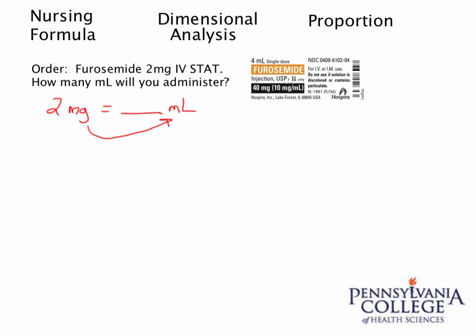If we look at the label here to the right, I see 4 milliliters and 40 milligrams. This is the information I want — I'm told that 10 milligrams are contained within 1 milliliter. Regardless of which method you use — the nursing formula, dimensional analysis, or proportion — you must have this information. The concentration must be used.